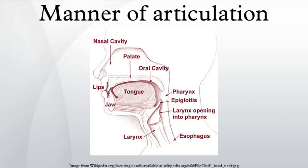Flap, often called a tap, is a momentary closure of the oral cavity. The 'tt' of 'utter' and the 'dd' of 'udder' are pronounced as a flap in North American and Australian English. Many linguists distinguish taps from flaps, but there is no consensus on what the difference might be. No language relies on such a difference. There are also lateral flaps. Trill: in which the articulator is held in place and the airstream causes it to vibrate. The double 'r' of Spanish 'perro' is a trill. Trills and flaps, where there are one or more brief occlusions, constitute a class of consonant called rhotics.